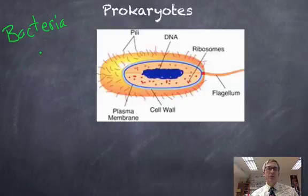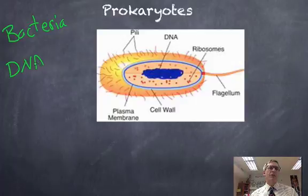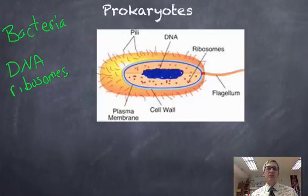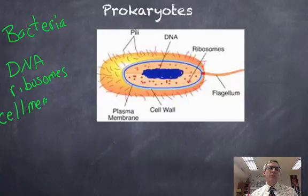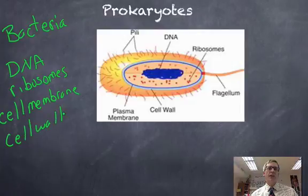They're important as decomposers in ecosystems. Many of them we have a mutualistic relationship with. They help us digest our food. But regardless, all bacteria are going to have DNA. They have a chromosome with their genetic information stored on it. They have ribosomes, and ribosomes make proteins using the information that is stored in the DNA. There is a cell membrane, a selectively permeable layer that controls what enters or leaves. And bacteria all have a cell wall for protection.